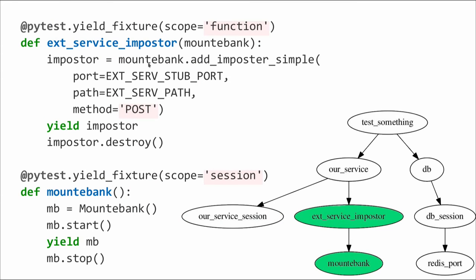The imposter: we use mountebank to create it. Create mountebank, start it, yield it, stop it. With mountebank we can create imposters — I decided for them to be function-scoped, since they remember what requests went into them, so you want to clean them out between tests. This is a simple declaration: some port on some HTTP path will return 200 for posts on this path. You can configure it more precisely, and it destroys itself afterwards.